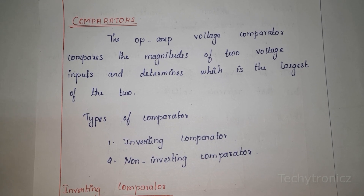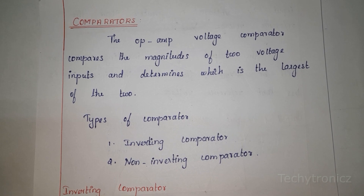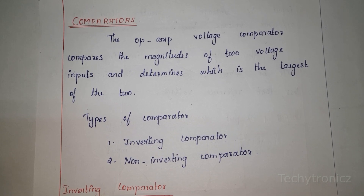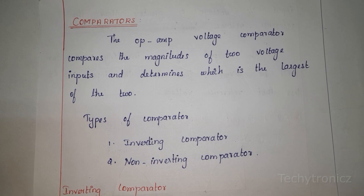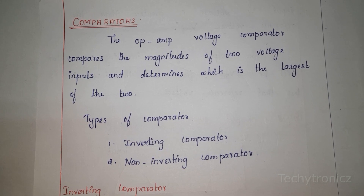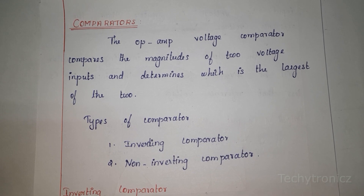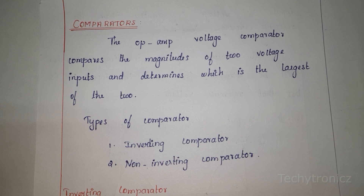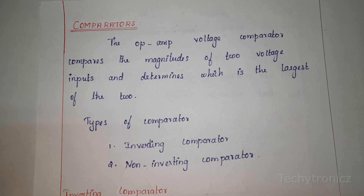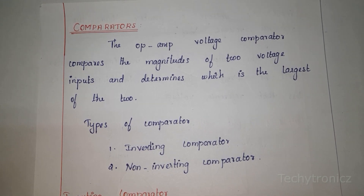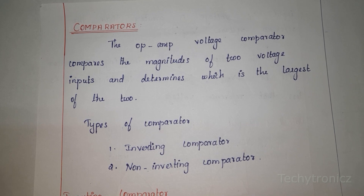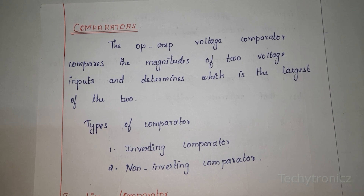From this we can say the comparator is a decision-making circuit. It takes two inputs and determines which one is the largest. It makes use of an operational amplifier's very high gain in its open-loop state — that means there is no feedback resistance.